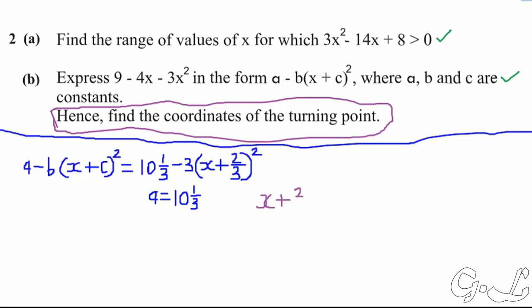From the expression, we take the part in brackets and set X plus 2 over 3 equal to 0, so that we find the actual value of X. When you make X the subject, the 2 over 3 goes to the right-hand side and becomes negative. So X is equal to negative 2 over 3.